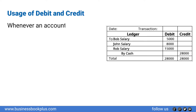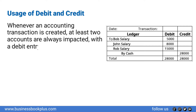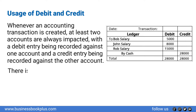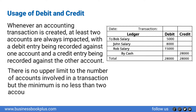Whenever an accounting transaction is created, at least two accounts are always impacted, with a debit entry being recorded against one account and a credit entry being recorded against the other account. There is no upper limit to the number of accounts involved in a transaction, but the minimum is no less than two accounts.